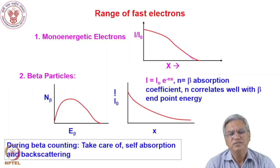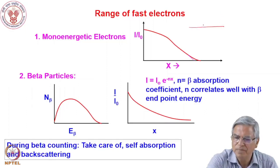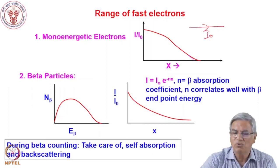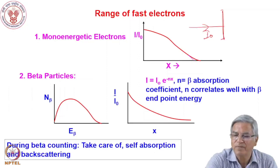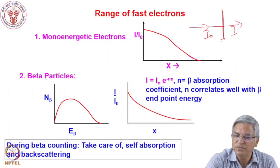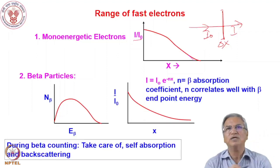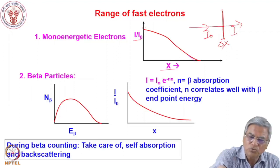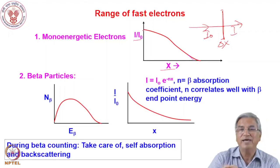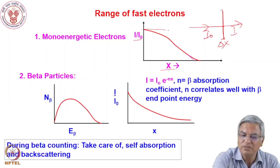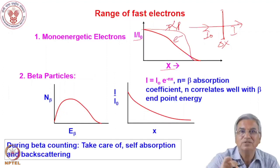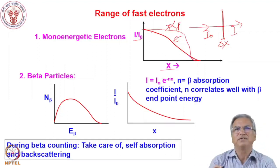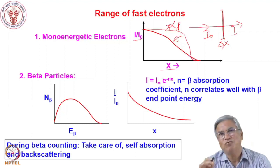Now let us discuss the range of fast electrons. In the transmission graph, the initial intensity I₀ passes through a thin slice of material with thickness δx and the transmitted intensity is I. For mono-energetic electrons, the intensity decreases monotonically because electrons get lost from the path from the beginning itself, unlike alpha particles which maintain intensity until the end of their range. Therefore, we cannot define a well-defined range for fast electrons.